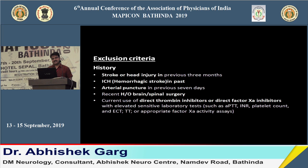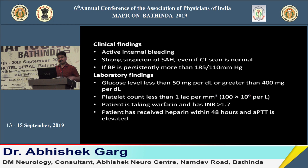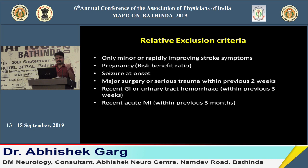Further exclusion criteria: active internal bleeding, strong suspicion of subarachnoid hemorrhage even if CT is normal, BP persistently above 185/110, blood sugar less than 50 or more than 400, platelet count less than 1 lakh, warfarin use with INR more than 1.7, or heparin received within 48 hours with elevated aPTT.